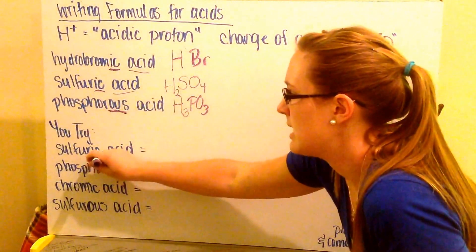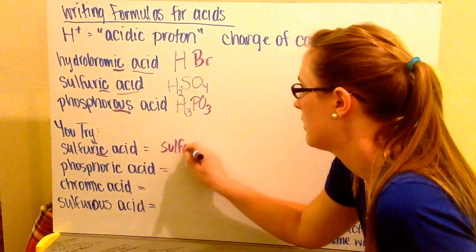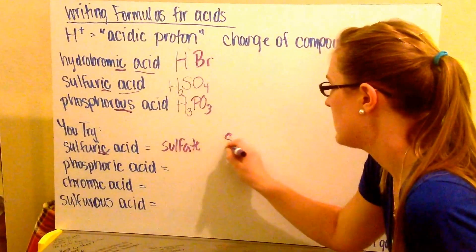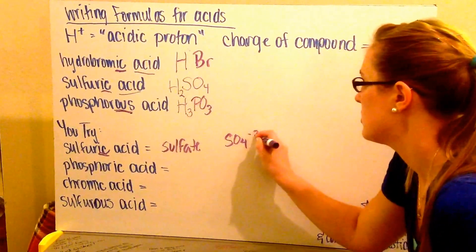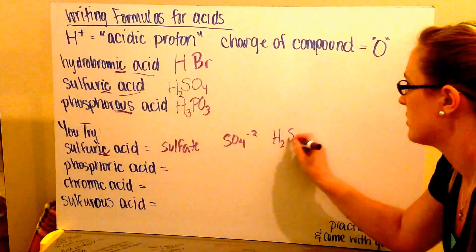For the first one, you should have seen that it has that IC ending. So that means I had to have sulfate. So sulfate is SO4 minus 2. So you need to have two hydrogens in front, so I need to have H2SO4.